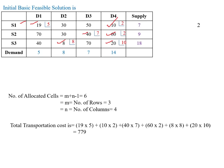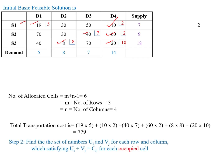Step 1 is completed. Now we move to Step 2: we have to find the set numbers u_i and v_j for each row and column, satisfying u_i + v_j = c_ij for each occupied cell. We find u1, u2, u3 for the three rows, and v1, v2, v3, v4 for the four columns. Here i is the row number, j is the column number, and c_ij represents the transportation cost per unit from supply i to demand j.